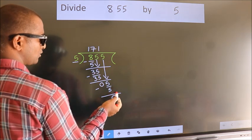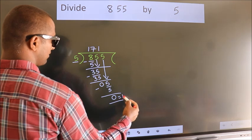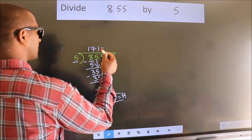No more numbers to bring it down. So, we stop here. This is our remainder. This is our quotient.